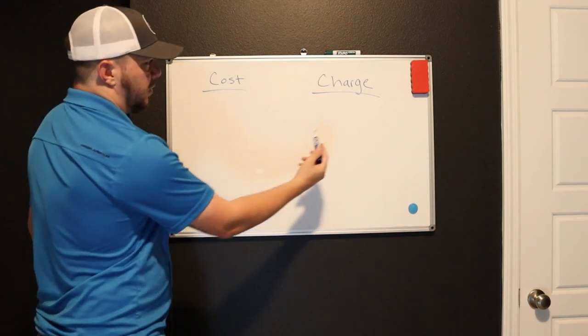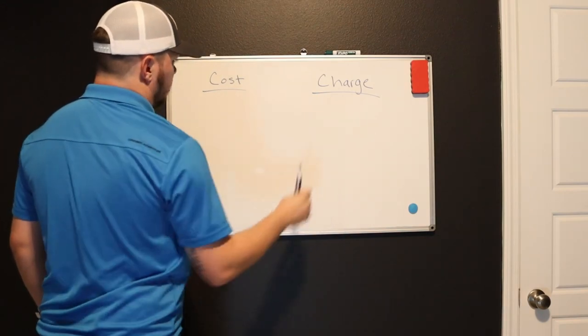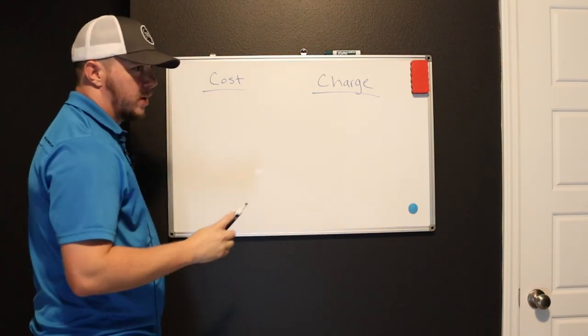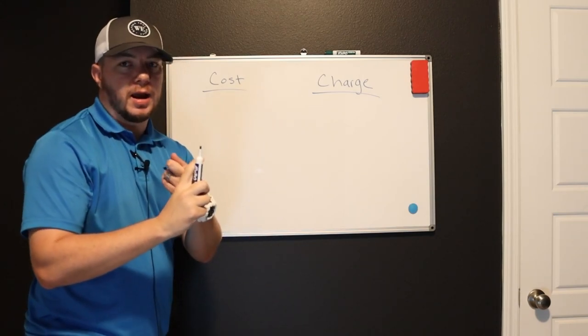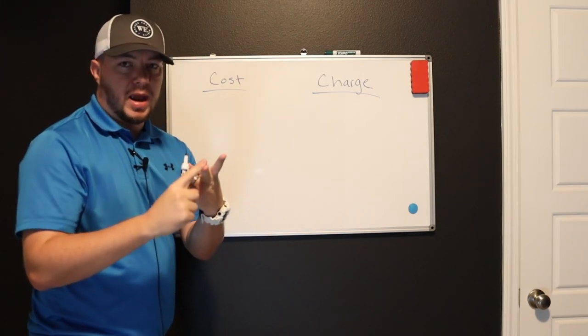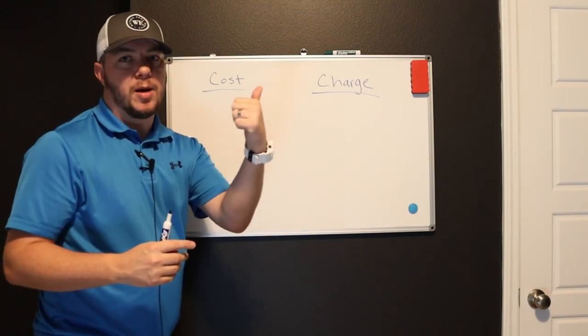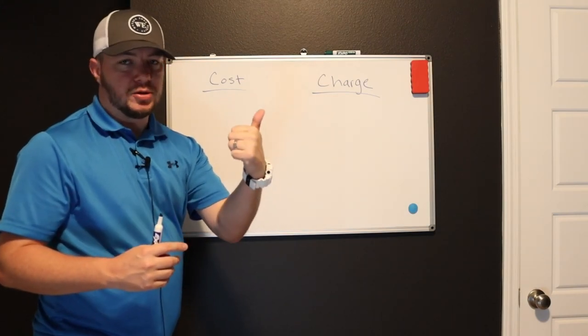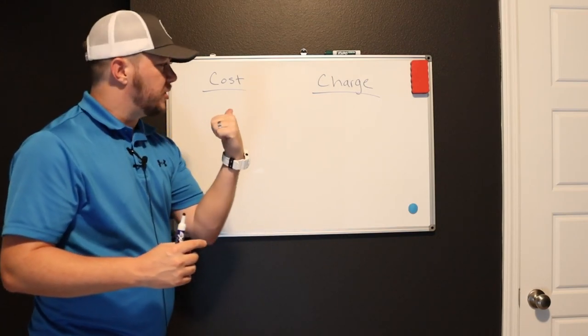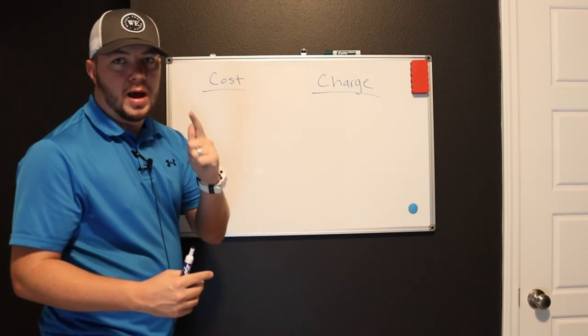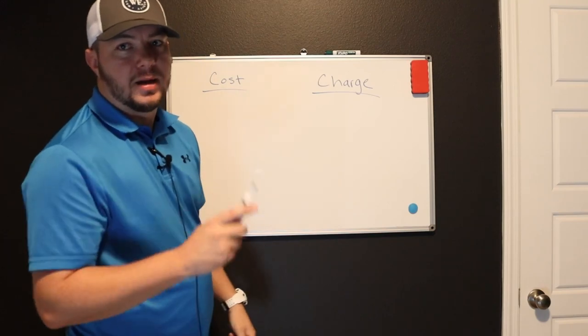We have two categories here. We've got cost and we've got charge. This is what you're going to charge. This is what it actually costs you. This is not including any overhead like a paying receptionist, paying insurance, et cetera. This is strictly on labor and material paint, how much it costs you to buy the paint, how much you should charge for the paint. How much it costs you to paint the wall, how much you should charge to paint the wall combined into one number.